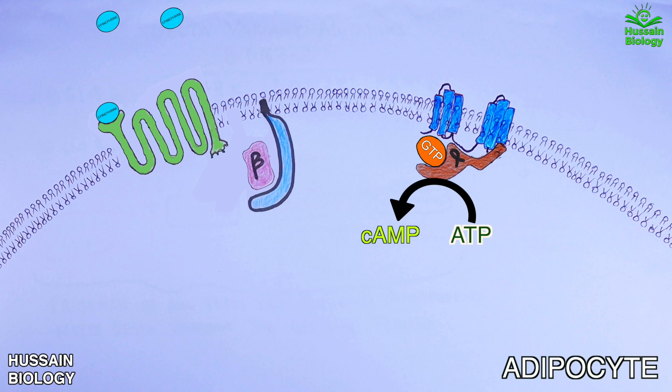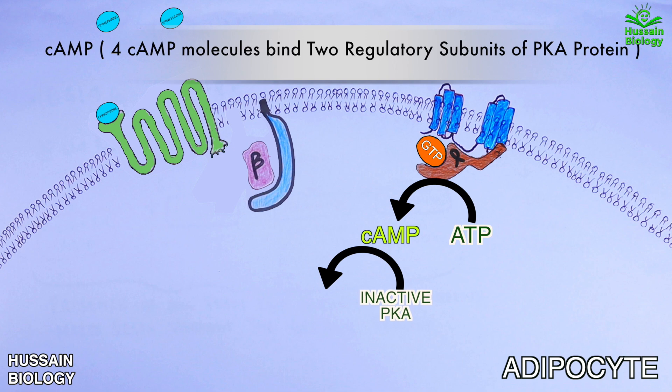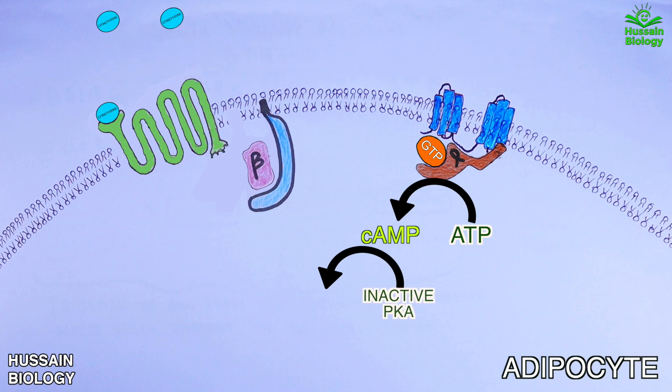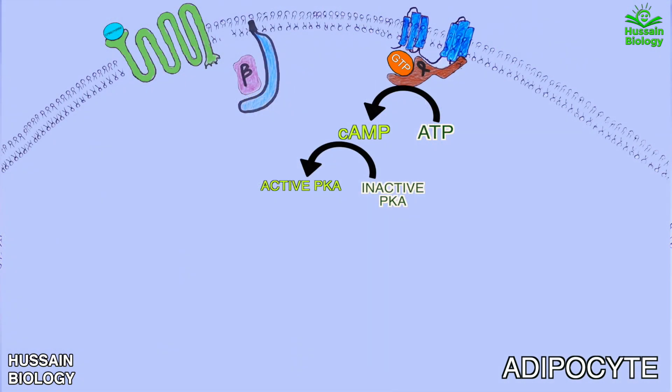And these cyclic AMP molecules attach with the inactive protein kinase A to its regulatory subunits and render the catalytic subunits of PKA active. So we have the fully activated PKA protein now.